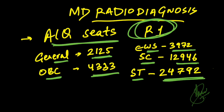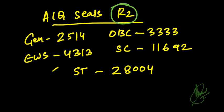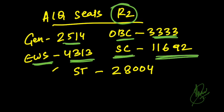These are the closing ranks for round 1 for MD Radio Diagnosis. For round 2, the closing ranks are: General category — 2514, OBC — 3333, EWS — 4313, SC category — 11692, and ST category — 28004.